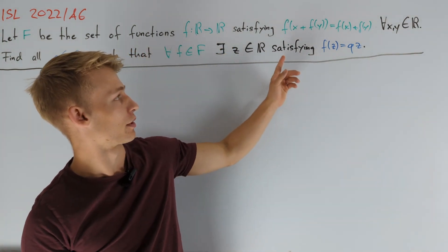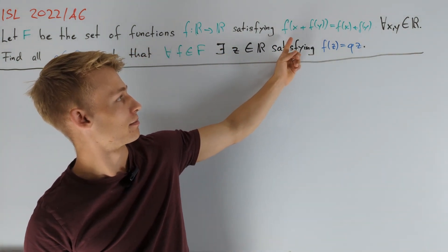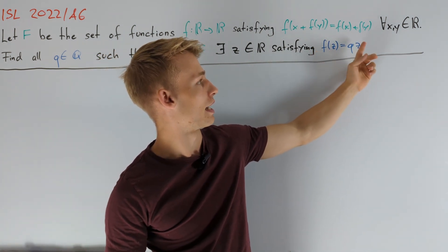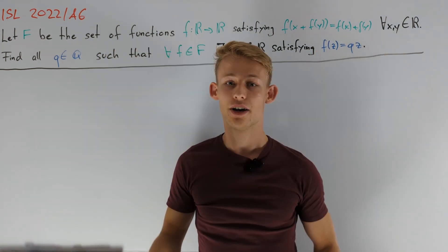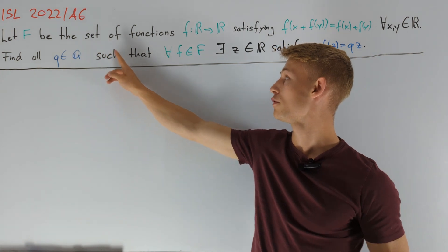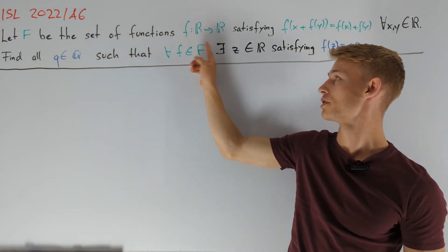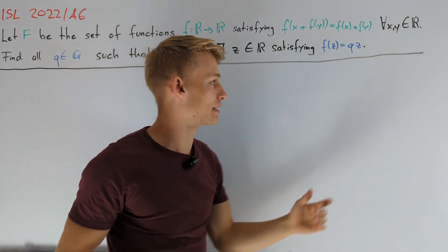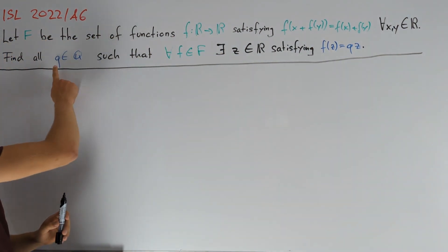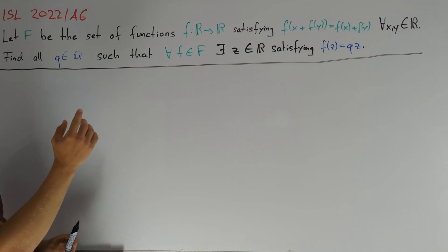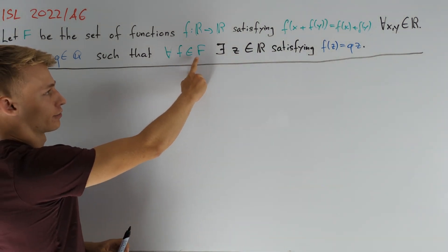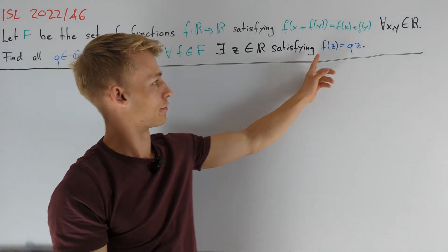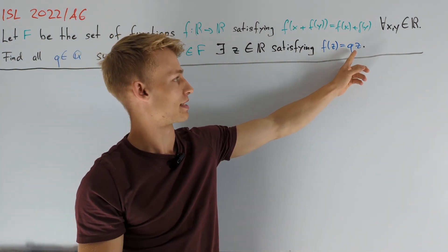We consider the following functional equation: f of x plus f of y equals f of x plus f of y, for all x, y out of the real numbers. Let F be the set of all functions from the real numbers to the real numbers that satisfy this functional equation. Our task is to find all rational numbers q such that we can find, for every function f out of the set F, a real number z such that f of z equals q times z.